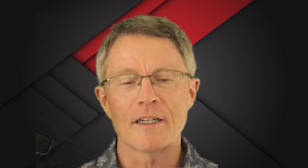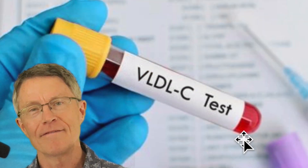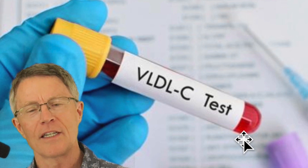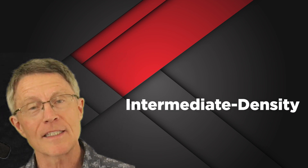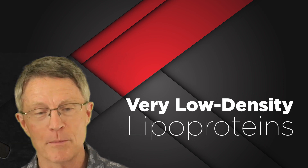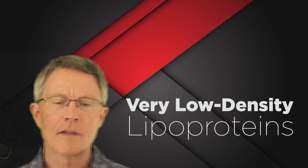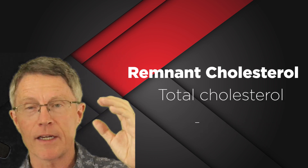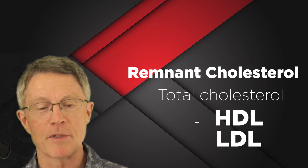Remnant cholesterol is basically looking at VLDL, or the triglyceride-rich cholesterol. That's IDL and VLDL. IDL stands for intermediate density lipoprotein, and VLDL stands for very low density lipoprotein. The easiest way to figure out what's remnant cholesterol is to take your total cholesterol and subtract the HDL and the LDL. Everything else is remnant cholesterol.